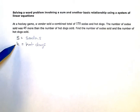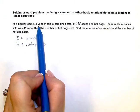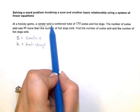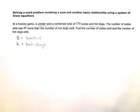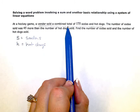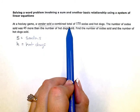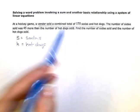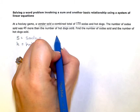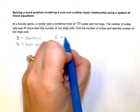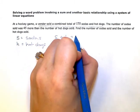My first equation is going to come from this sentence right here. So I have a combined total of 175 sodas and hot dogs. So the sodas plus the hot dogs equaled 175.